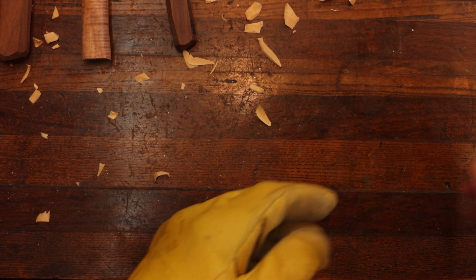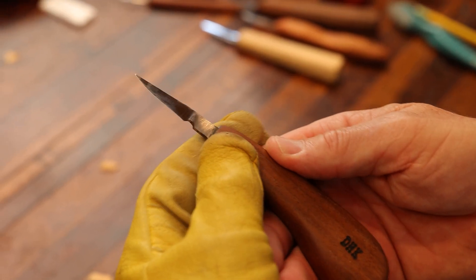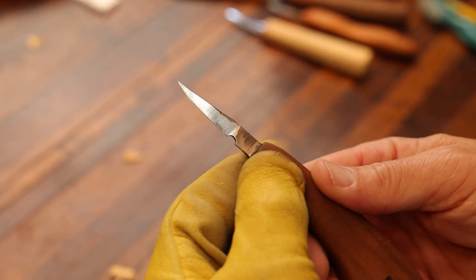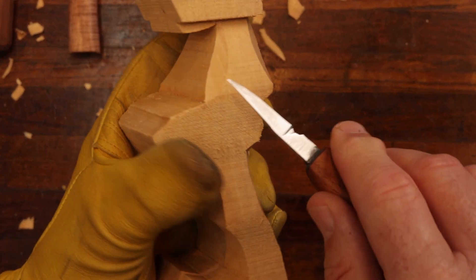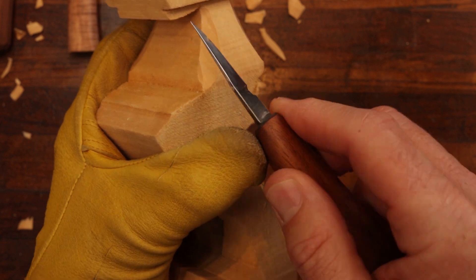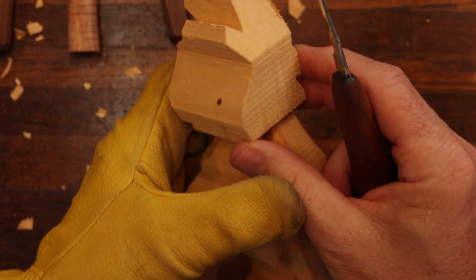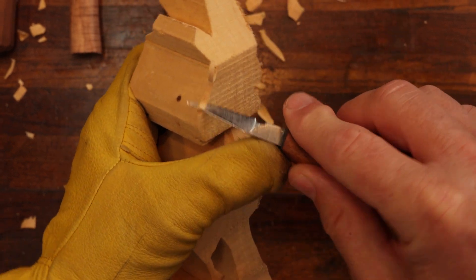My fourth knife I recommend is a Don Mertz, and this is a pelican shaped knife. It's very flexible and it is for getting in and undercutting and creating shadows in your woodwork, in your carving that you're doing.